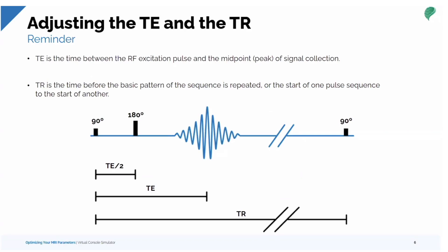Reviewing the parameters: TE is the time between the RF excitation pulse — the 90-degree pulse — and the midpoint of our echo, our signal that's received. You can see the TE from the 90-degree excitation pulse to the midpoint of the echo. The TR is the time between the start of the pulse sequence with the 90-degree excitation pulse all the way over to the start of the next pulse sequence. Things happen within that TR period, such as rephasing and refocusing.